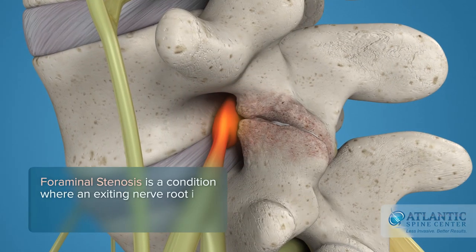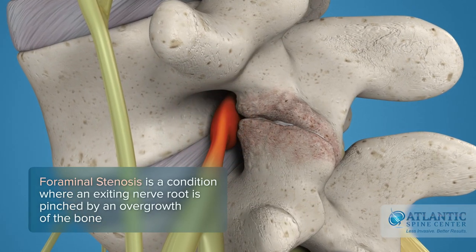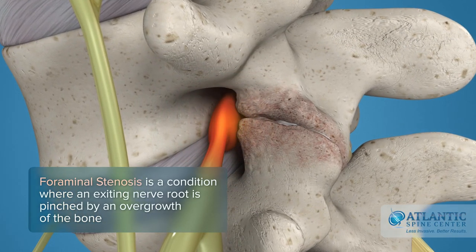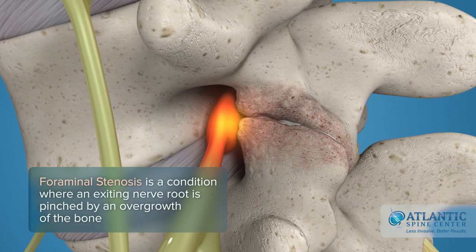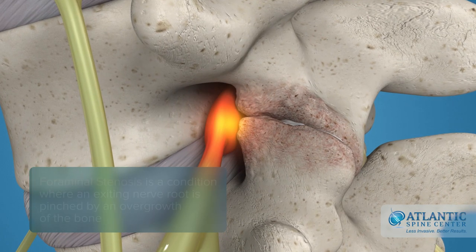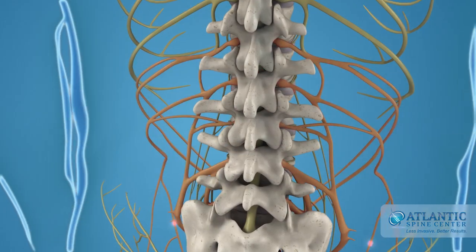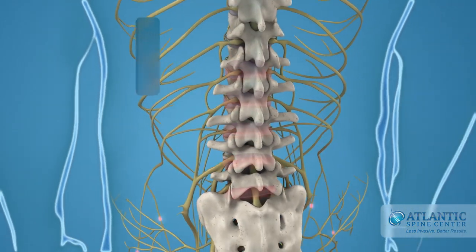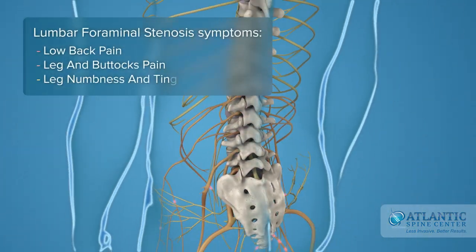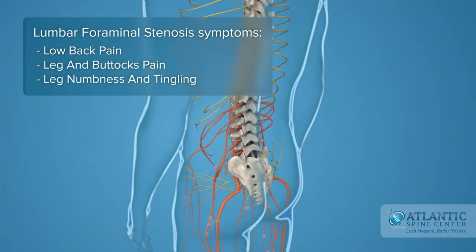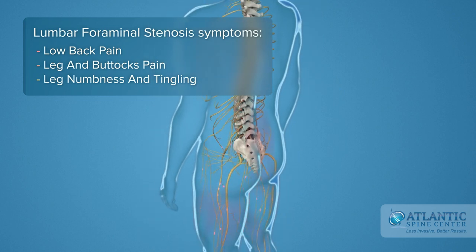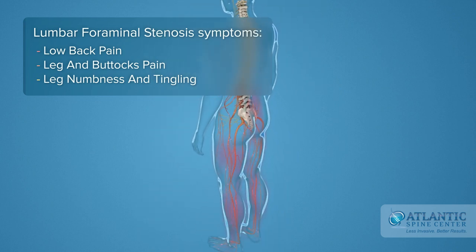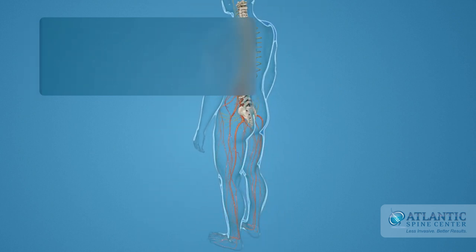Foraminal stenosis is a condition where an exiting nerve root is pinched by an overgrowth of bone. Lumbar foraminal stenosis symptoms include low back pain, leg and buttocks pain, and leg numbness and tingling.